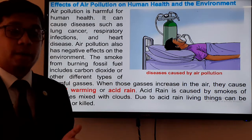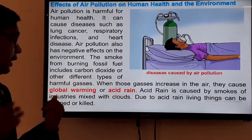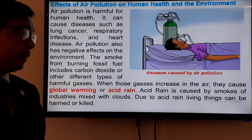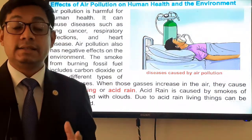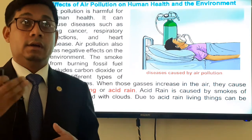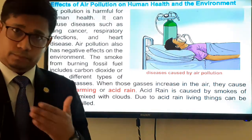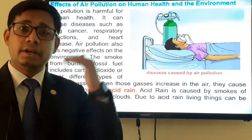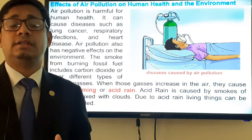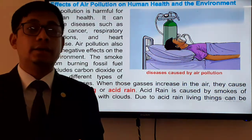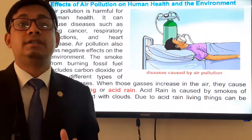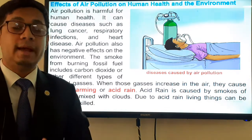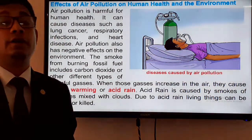Acid rain is caused by smoke from industries mixing with clouds. Due to acid rain, living things can be killed. Since acid rain contains a lot of chemicals, it creates danger not only for human beings but also for plants and other animals. We should be aware of this.